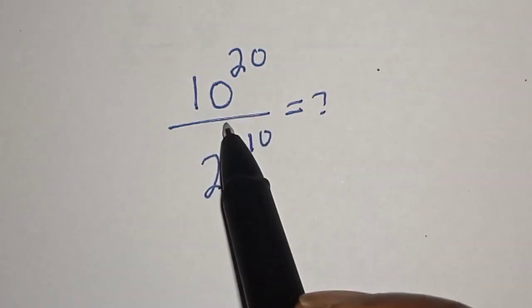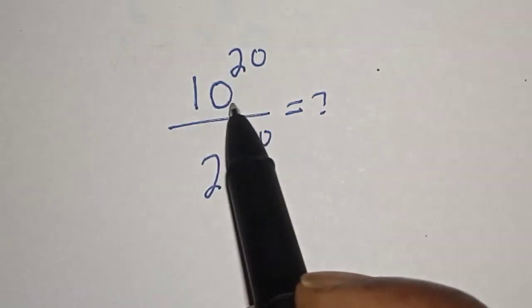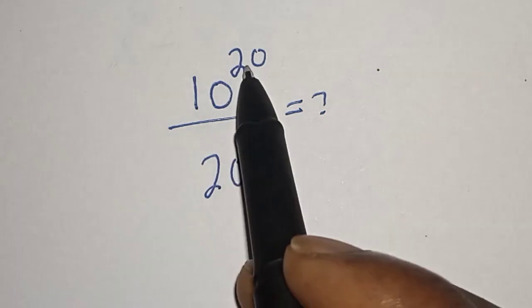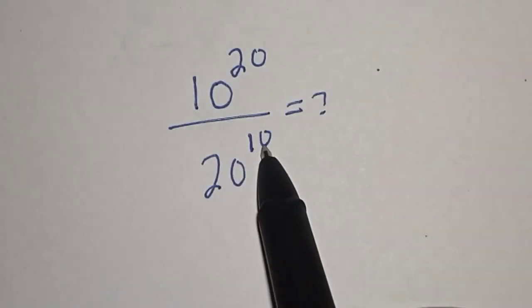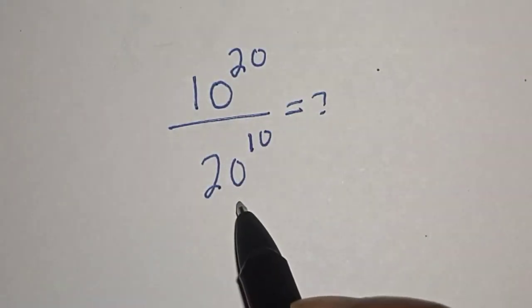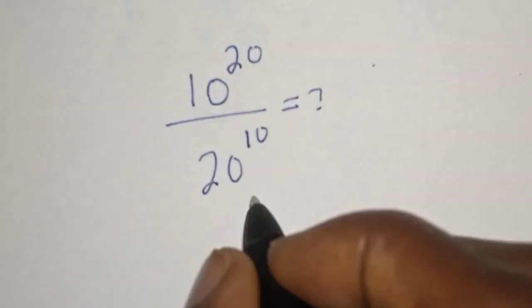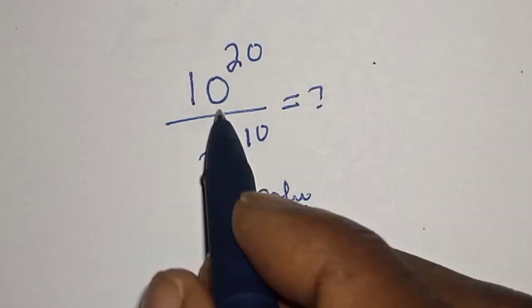Hello, welcome to Magis. In this class we want to evaluate this math problem: 10 raised to power 20 divided by 20 raised to power 10. Is it equal to 1? Like, share, comment and subscribe. Here is the solution.